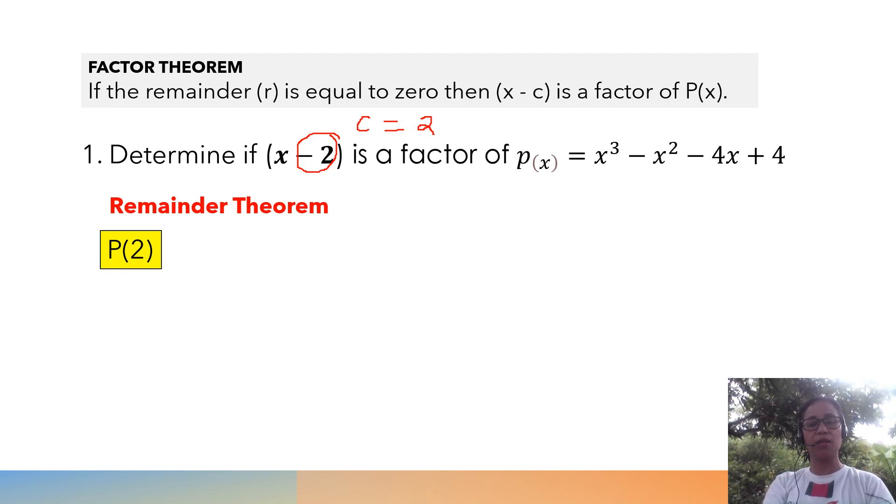We are now going to obtain this: 2³ - 2² - 4(2) + 4. With the use of a calculator, you can actually input all these equations and you will get an instant answer. Now, let's evaluate this. It will become 8 - 4 - 8 + 4.